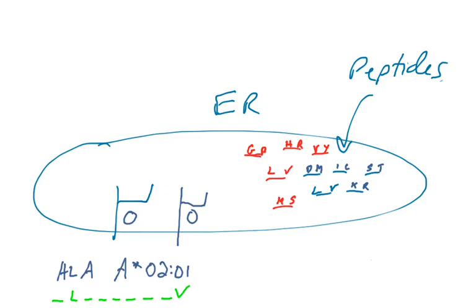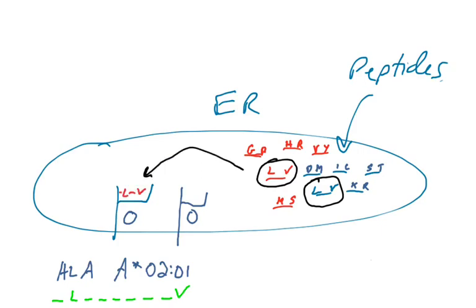No, the answer is definitely not. Imagine any 9-mer peptide — it's going to have some amino acid at position 2 and some amino acid at position 9. I've drawn in some random amino acids at positions 2 and 9 in some of the self peptides and some of the viral peptides. The only peptides that will load onto this MHC class 1 molecule are ones that have the corresponding anchor residues. There are two such peptides here: one viral peptide and one self peptide — both have a leucine at position 2.